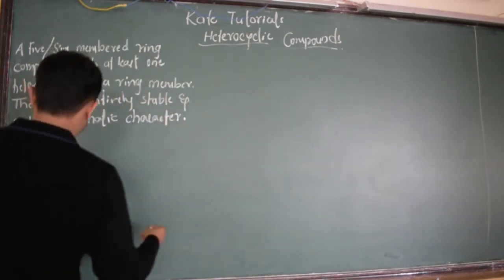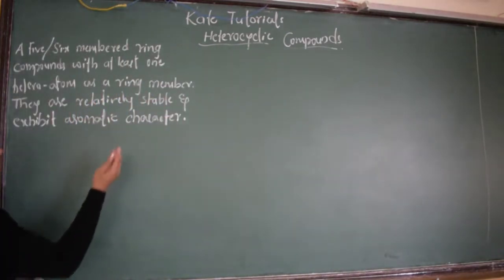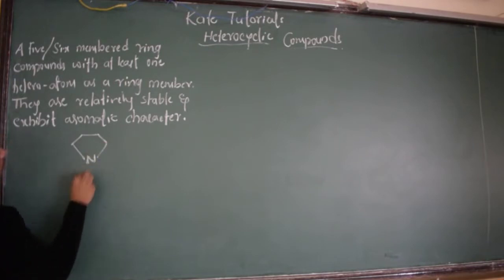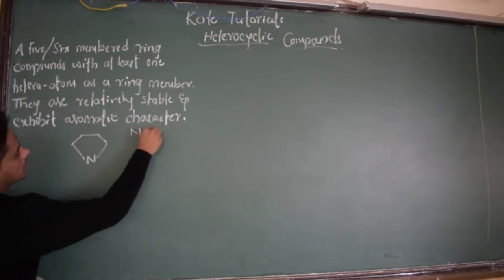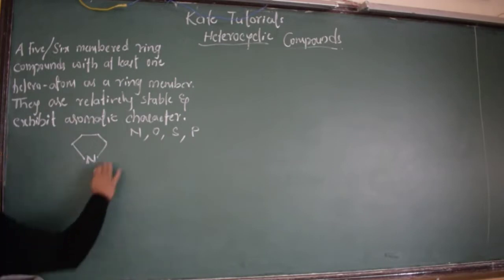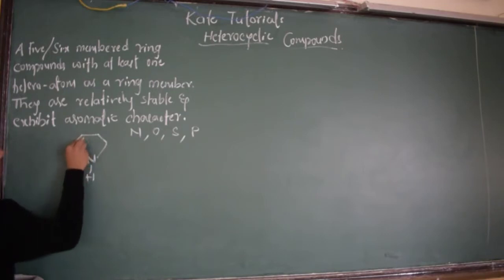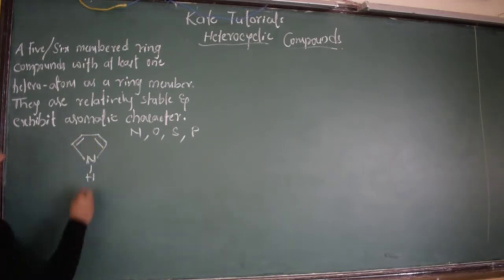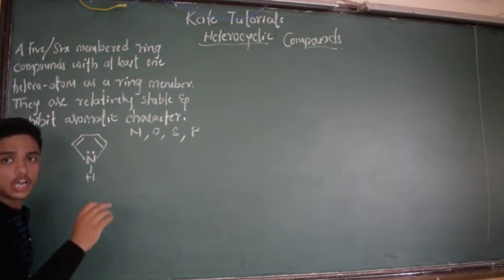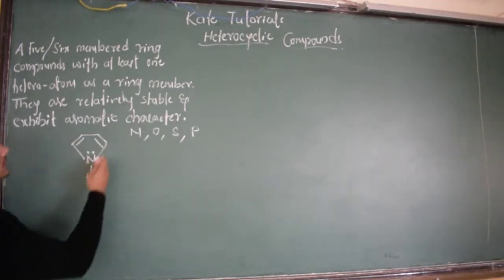Let me give an example. This is one example for heterocyclic compounds because in the ring there is a hetero atom. Hetero atoms may be nitrogen, oxygen, sulfur, or phosphorus. These are the hetero atoms which should be present in the ring. These compounds are relatively stable because of resonance, and they are aromatic.